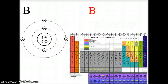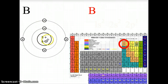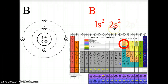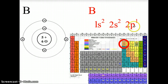Let's try boron. Boron is in the first column of the P block, still in the second row. Using the Bohr atom model, it has two electrons in the first shell and three in the second shell. The first two electrons give us 1s2. The next two come from the S block of the second row: 2s2. Boron is in the first column of the P block in the second row, giving us 2p1. Boron has five electrons total: two in the first shell, three in the second.